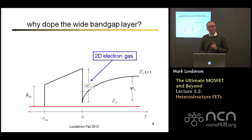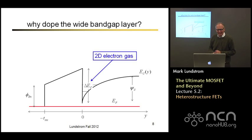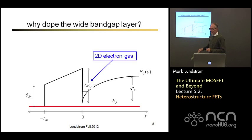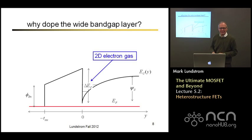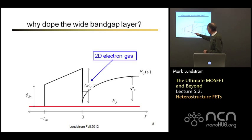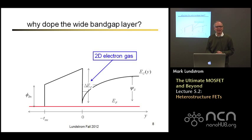You might wonder why dope it at all — why not treat the wide band gap layer like the insulator in a MOSFET? You can, but the problem is that the band gaps aren't big enough and the conduction band discontinuity isn't large enough. In silicon dioxide the band gap is 8 eV and the barrier is about 4 eV — more than enough to keep electrons in the semiconductor. But it's not enough in these material systems where both layers are three-five semiconductors. If you apply a positive gate voltage and try to get more charge at the interface, some charge will hop over the barrier and flow out the gate, giving you gate current.